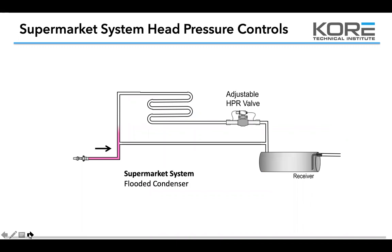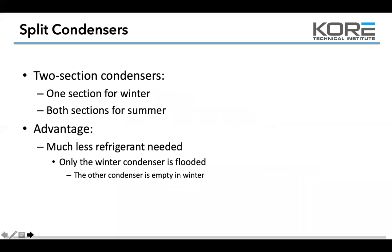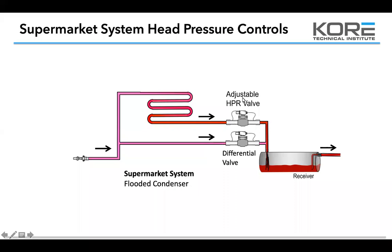Supermarket head pressure control is the same concept. On smaller racks you see the headmaster; on larger rack systems you have an adjustable head pressure control and a differential valve, both adjustable. The concept is the same — we're trying to stack liquid in the condenser to eliminate the condensing surface so we can keep that head pressure at a certain level, so as it pushes down through the liquid line we get enough differential across the valve to feed a good nice feeding pattern in that evaporator through the metering device.